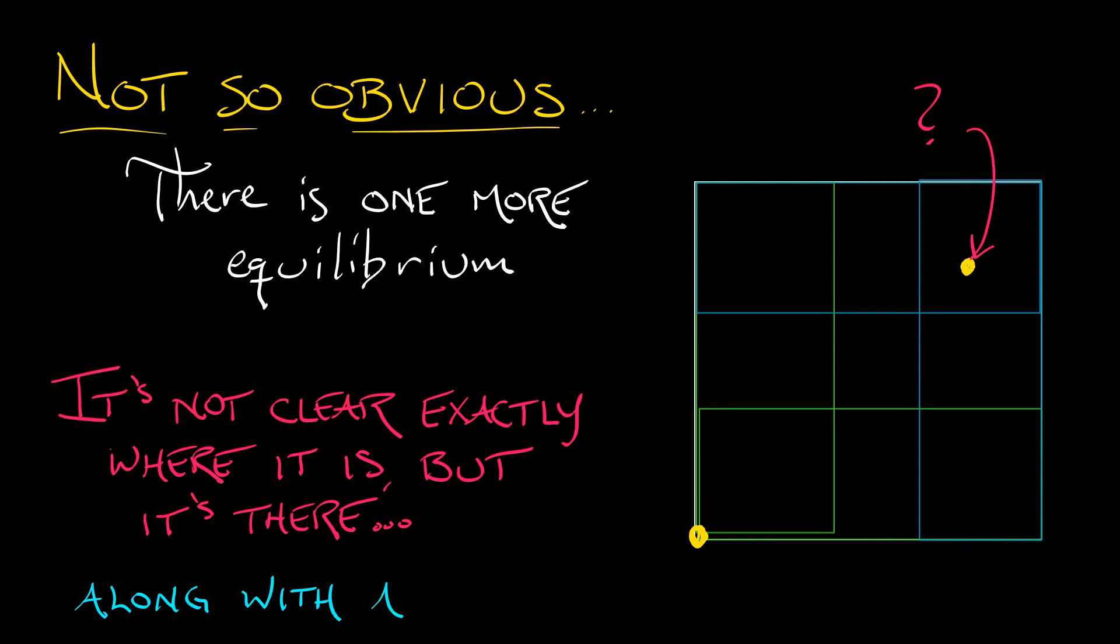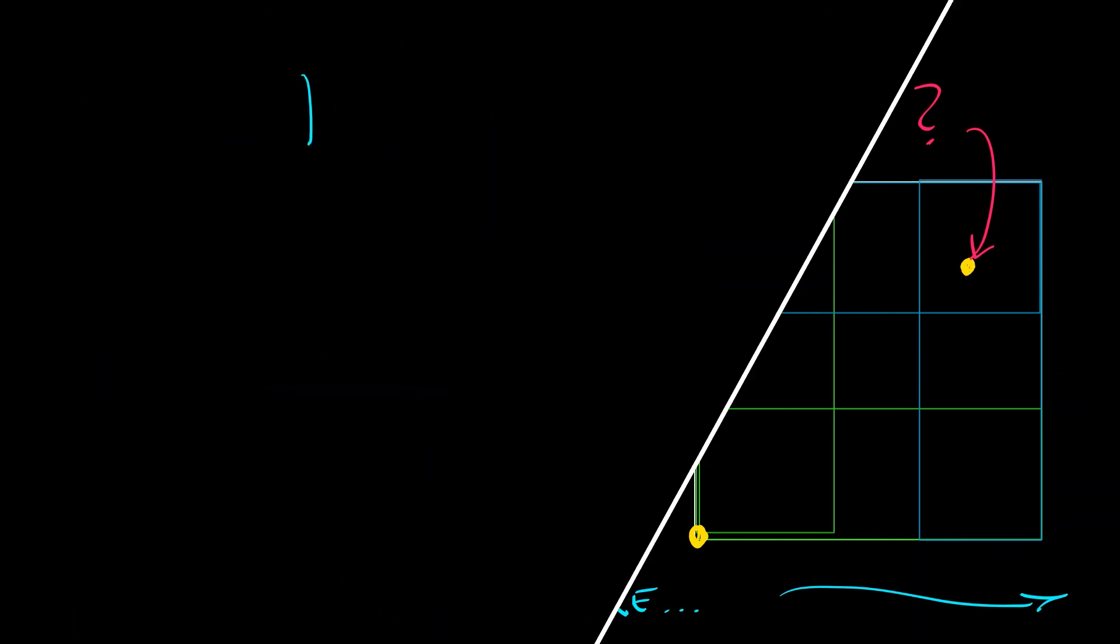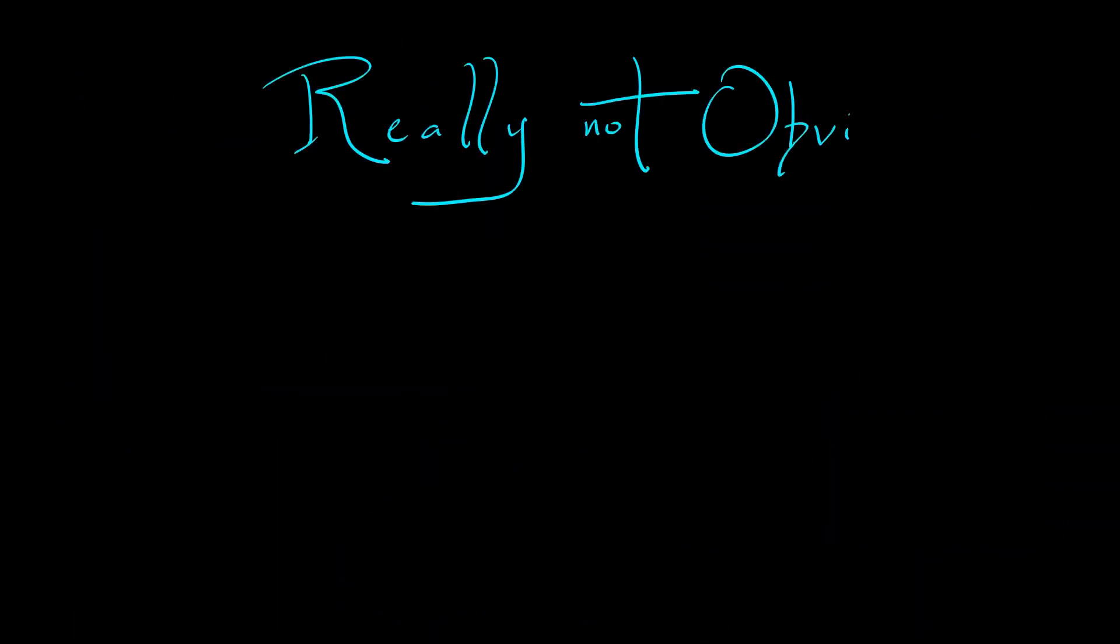It does exist along with a lot more. Why a lot more? Well, this is really not obvious. But this really is a chaotic system. There's a whole lot more going on here than what is obvious. And a whole lot more than just two equilibria.